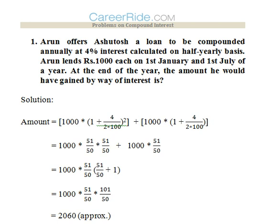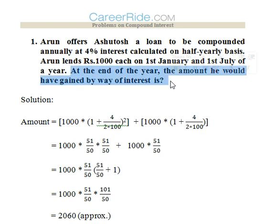The first question: Arun offers Ashutosh a loan to be compounded annually at 4% interest calculated on a half-yearly basis. Arun lends Rs. 1000 on 1st January and 1st July of a year. At the end of the year, the amount he would have gained by way of interest is?